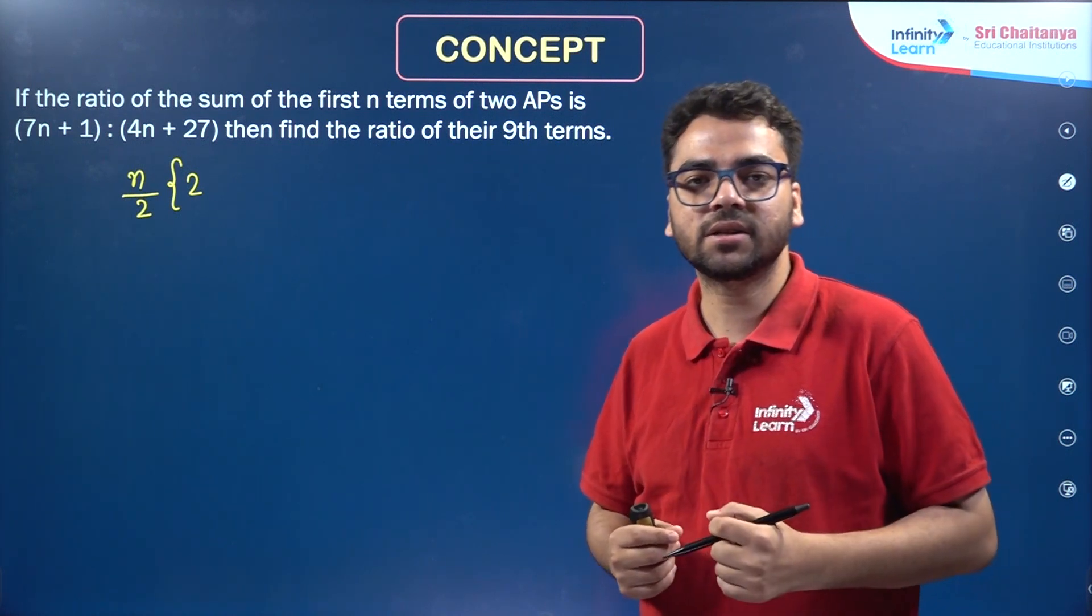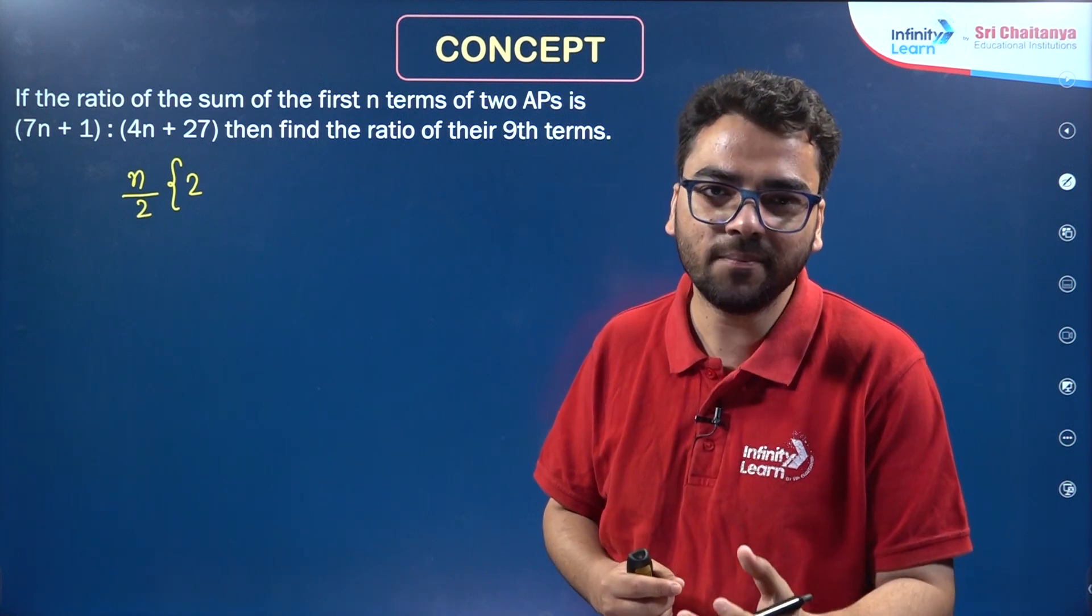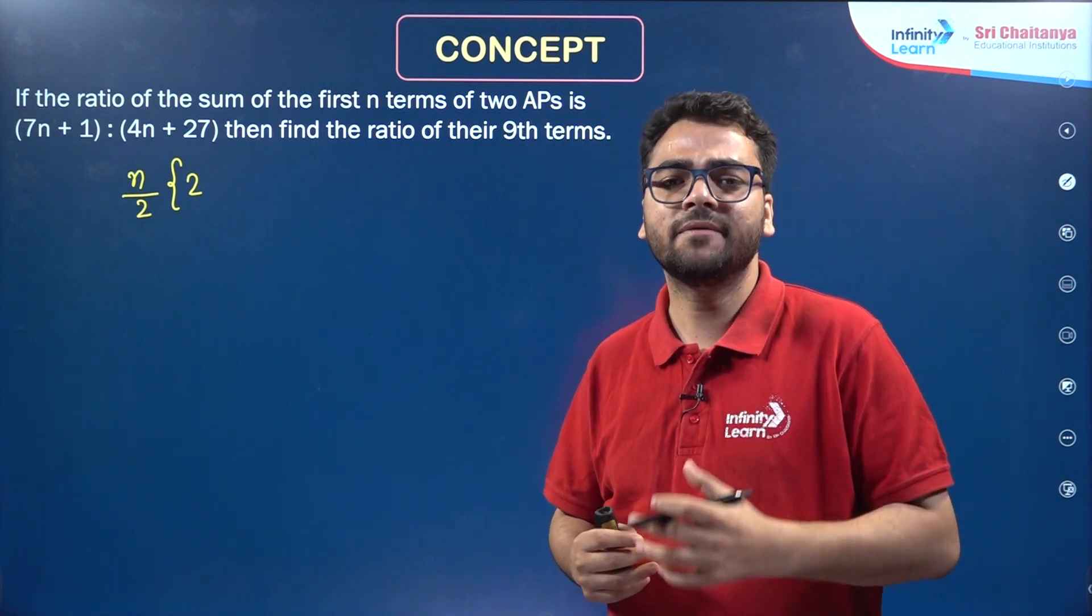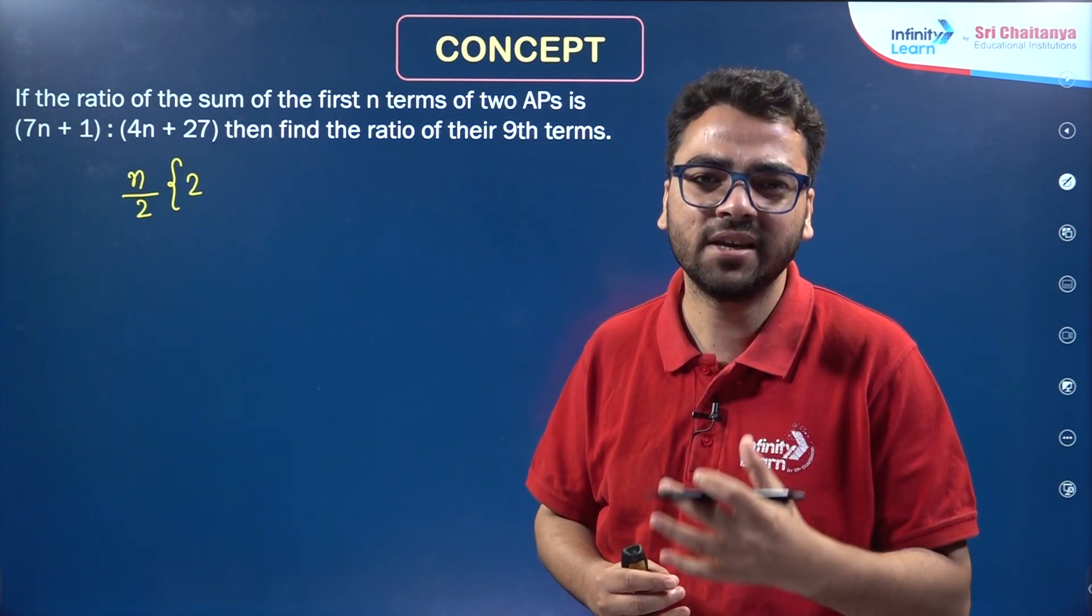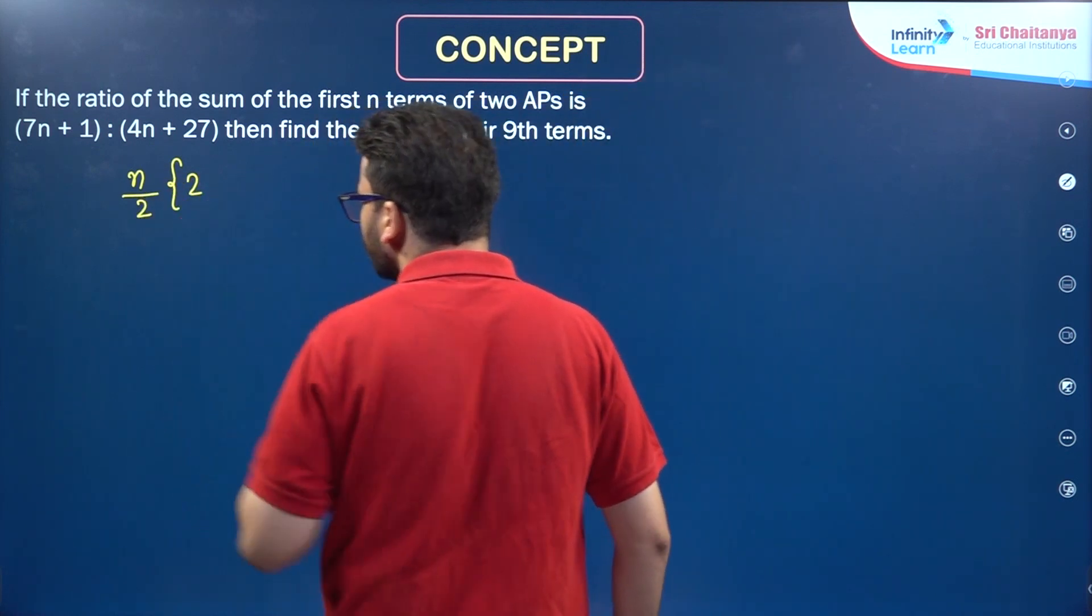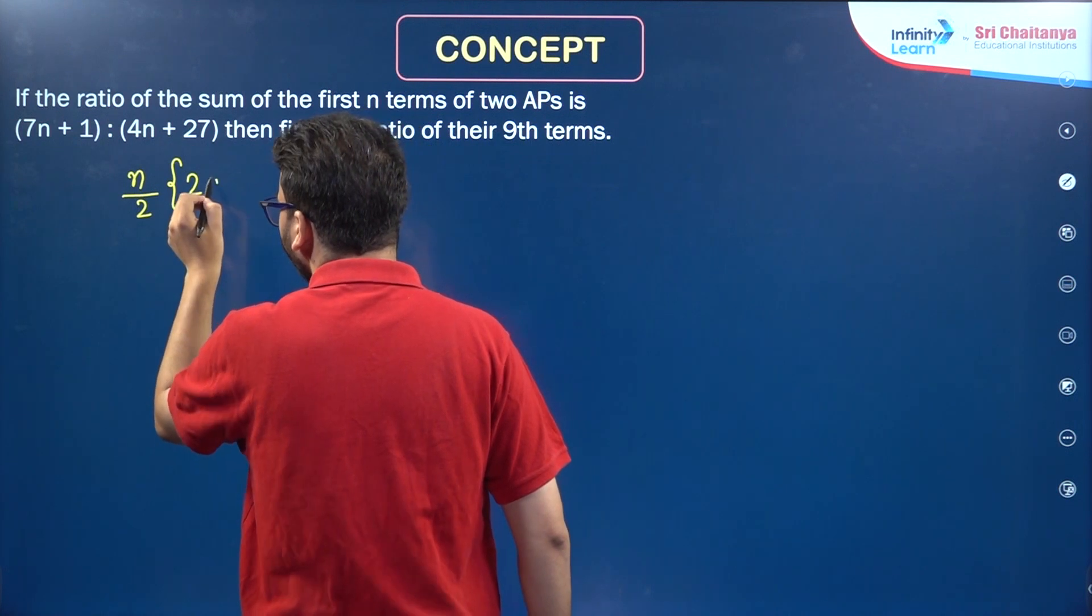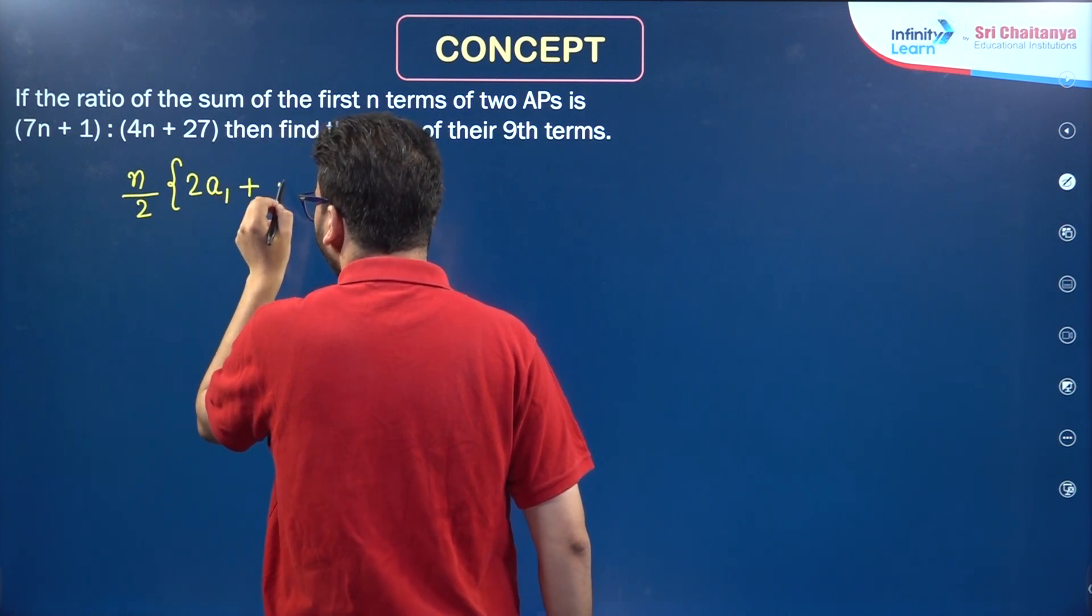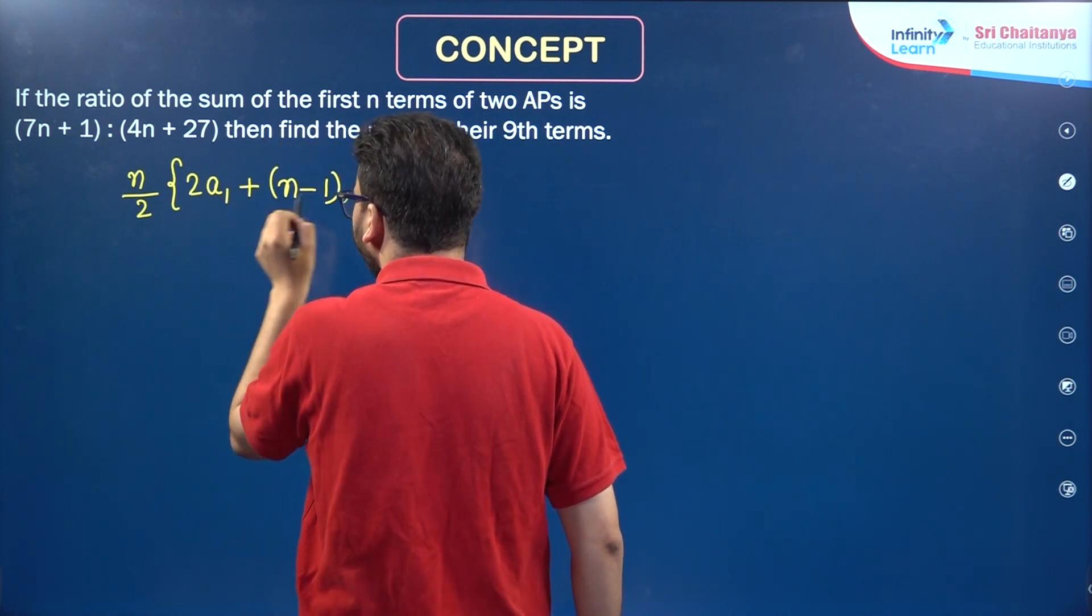So let us assume that the first term and the common difference of the first AP is A1, D1 and the first term and the common difference of the second AP is A2, D2. So sum of the first n terms of the first AP is n/2 × (2A1 + (n-1)D1)